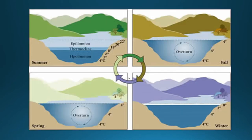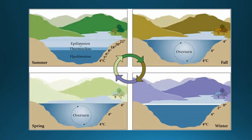The upper mixed layer is called the epilimnion — 'epi' meaning upper, like epipelagic or epibenthic. Then you have the thermocline, which is a sharp change in temperature. Then the hypolimnion. Sometimes you'll see the term metalimnion instead of thermocline — they mean the same thing. We see warm temperatures of around 22–20°C up in the epilimnion, then a very drastic change from 18 down to 8°C over a small distance through the thermocline, and then it gradually decreases as you go deeper into the hypolimnion.